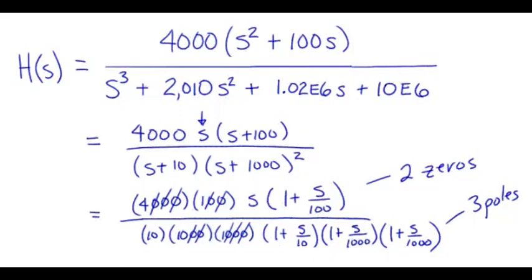So now we are having factored the transfer function, we turn to the phase plot and we've got again two zeros, three poles total.